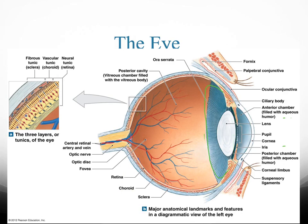One more structure to mention: the suspensory ligaments, which are present right over here. They're basically going to hold the lens. The lens is shaped through the suspensory ligaments to focus objects that are either close or far away. The older you get, the less flexible these suspensory ligaments are, so that's why after a while you need glasses — your suspensory ligaments can't stretch the lens enough to adjust to different depths.